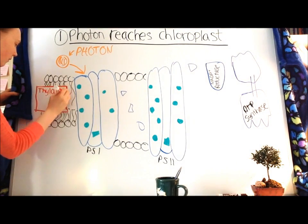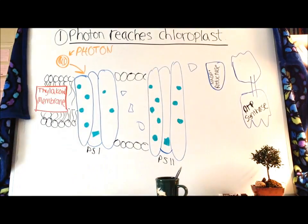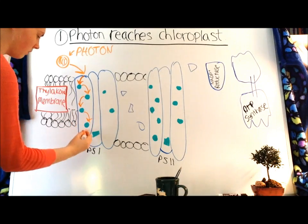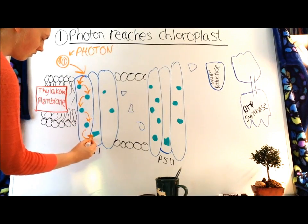Right now I'm labeling this as the thylakoid membrane. Just keep in mind that it's all happening in the chloroplast. The photon of light bounces from molecule to molecule until it reaches the reaction center.